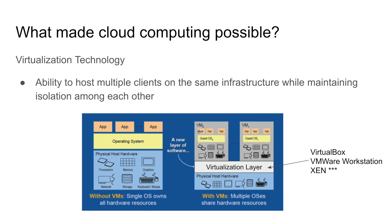When you have a virtualization layer on top of your physical hardware, it will allow you to run multiple operating systems. Look at this diagram — you have one operating system here, let's say Linux, and you can spin up another virtual machine on top of that with a different operating system. When you create a virtual machine on top of this virtualization layer, it will create virtual hardware inside that virtual machine. The guest operating system will think it has its own physical hardware, but actually these are virtual hardware.